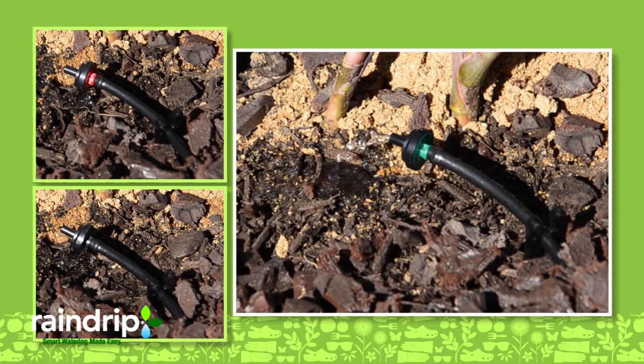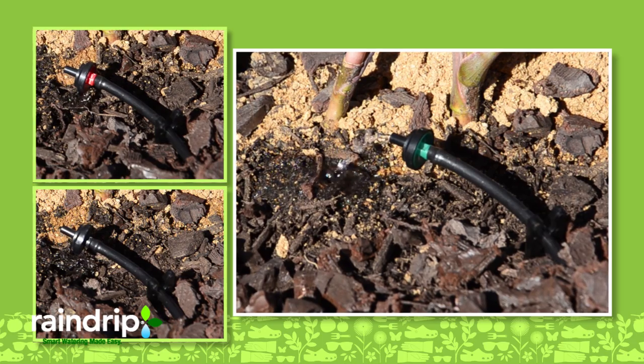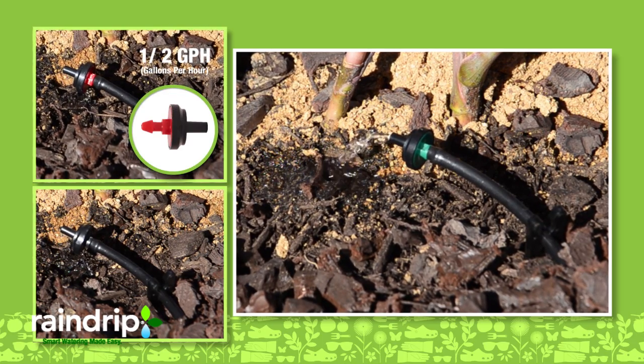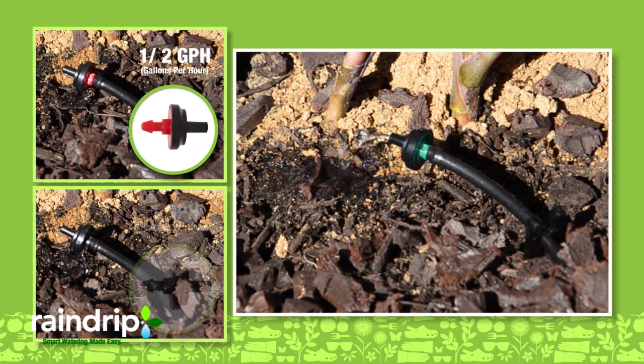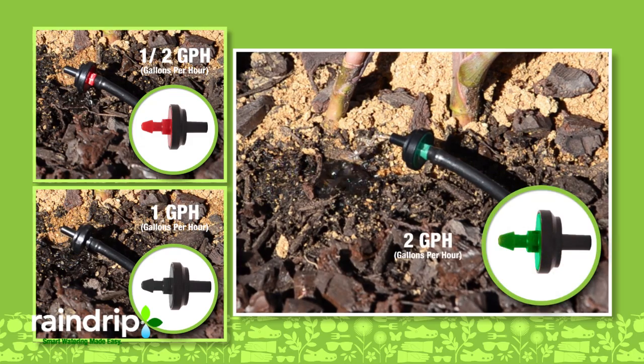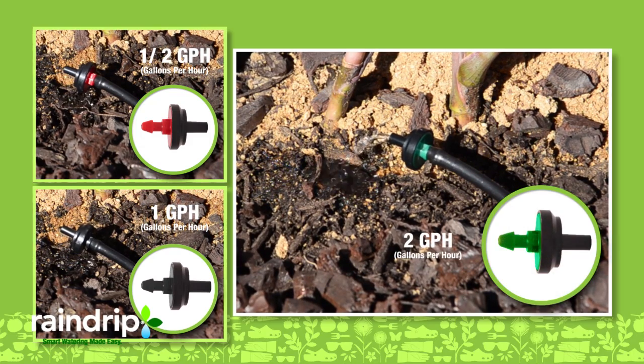Online drippers have preset flow rates and are color-coded: red for half gallon per hour, black for one gallon per hour, and green for two gallons per hour.